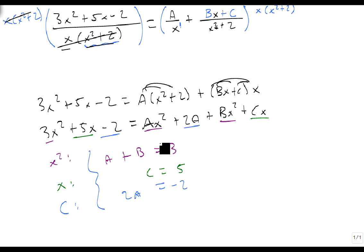A plus B is 3, we can't do much with yet, but C equals 5 we can. And 2A equals minus 2 just means that A equals negative 1. So then we get negative 1 plus B equals 3. Add 1 to both sides, and B is 4.